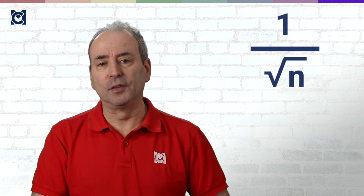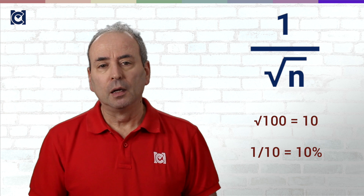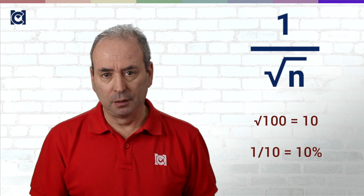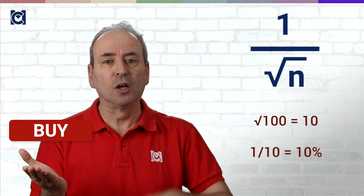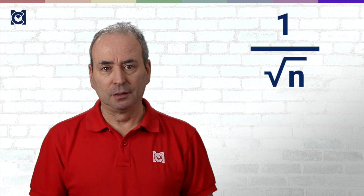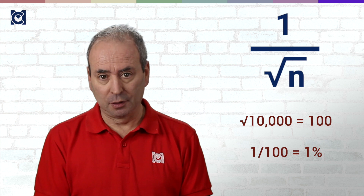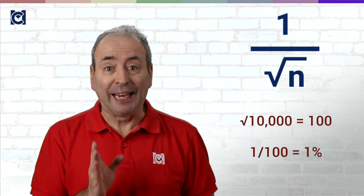So how do we know if we've got a significant change? Crudely, the rule is 1 over the square root of n. The square root of 100 is 10, which means that if you get 100 visits to your site in a month you need around a 10% difference in the behaviours on the two versions. If on the other hand you have 10,000 visitors, the square root is 100, so you only need a 1% difference to consider that it is significant.